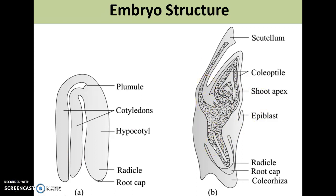In the embryo of a grass (diagram B), there is only a single cotyledon, which is modified to form a scutellum. The scutellum forms an interface between the embryo and the starchy endosperm tissue. The basal sheath of the scutellum is elongated to form a coleoptile, which covers and protects the first leaves while buried beneath the soil. The base of the hypocotyl has elongated to form a protective sheet surrounding the radicle, called the coleorhiza.